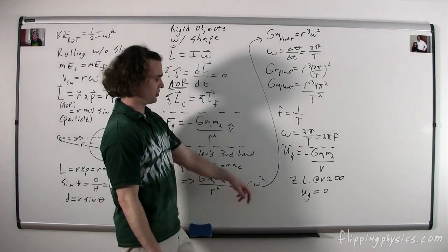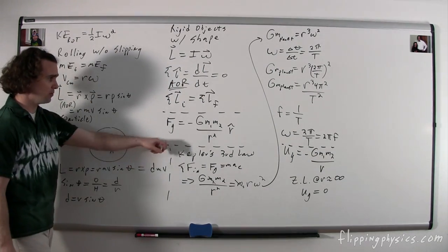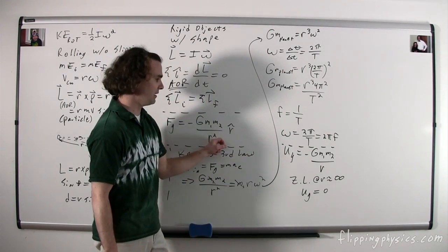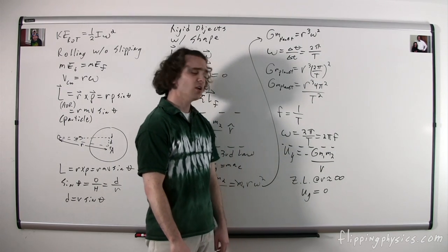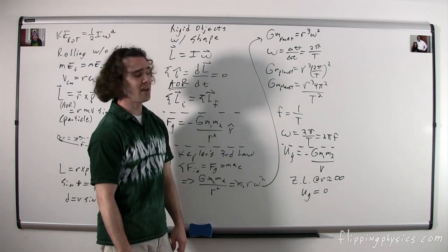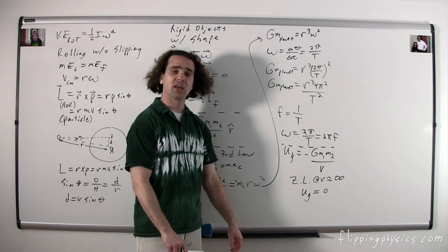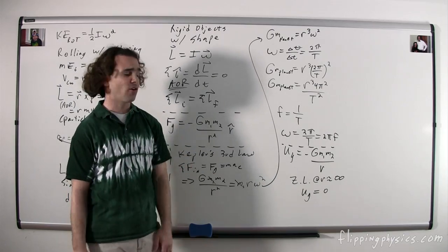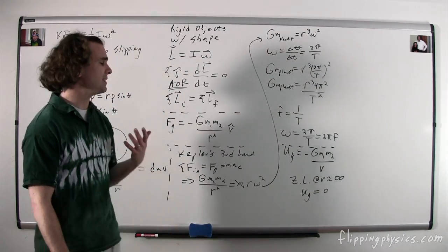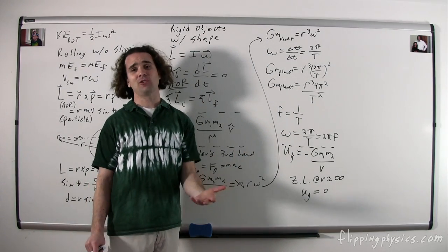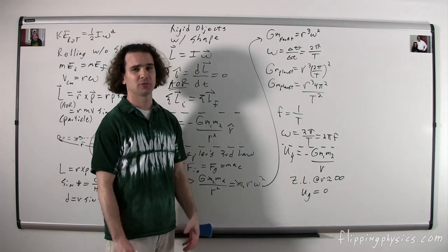Universal gravitational potential energy is negative big G times M₁ times M₂ over r — notice the difference from the force equation, which has r squared. The zero line is preset at r equals infinity, since 1/∞ = 0. Therefore, universal gravitational potential energy is always negative, and you must have two objects to define it.